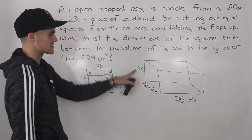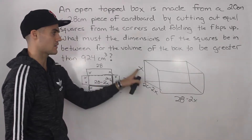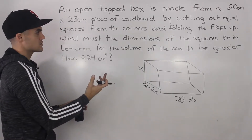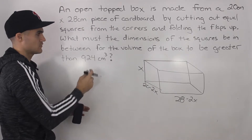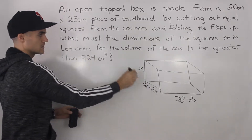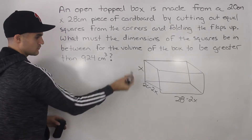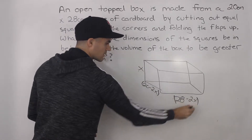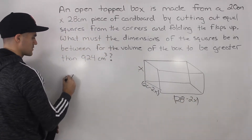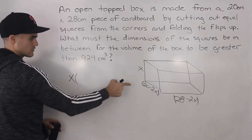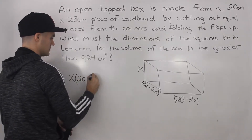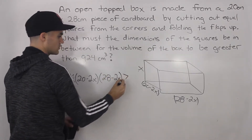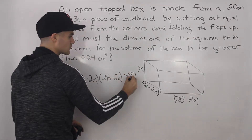Those are going to be the expressions for the height, the width, and the length of this box that we are creating. What we have to find is the dimensions of the squares — those x values — what do they have to be in between for the volume of this box to be greater than 924? The volume is just length times width times height. So: x times (20 minus 2x) times (28 minus 2x) has to be greater than 924.